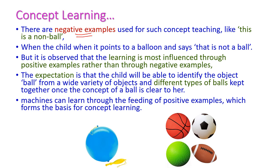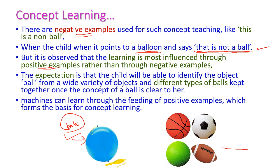Similarly, through negative examples also, we can teach objects to the child. For example, suppose if the child points to the balloon, the parent will say this is not a ball. Through positive examples, if we give more varieties of the same object, then the child can easily learn the exact object — for example, ball. These are different varieties of balls, that is, different types of balls. Similarly, the machine can also learn through positive examples. This is called concept learning.